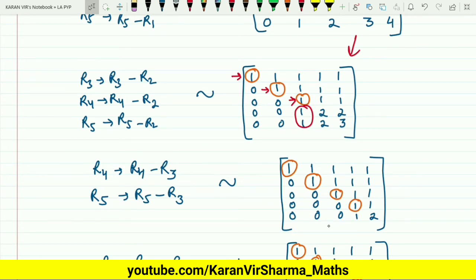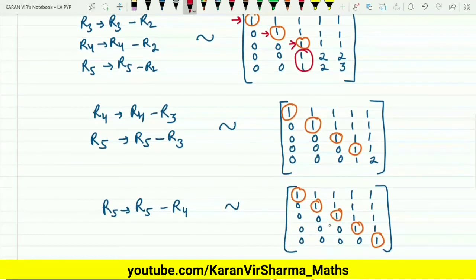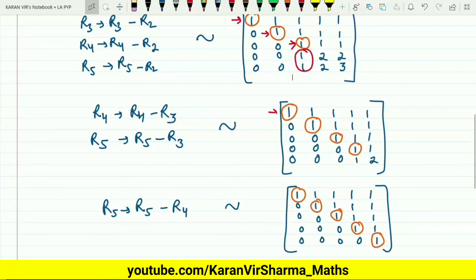Row 4 minus row 3, and row 5 transforms to row 5 minus row 3. On doing that operation, these will become zeros. So this was the first pivot, this is second, this is third. Now this will become the fourth pivot. Below this we need to make it zero.